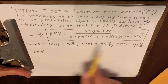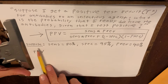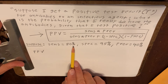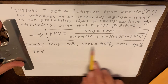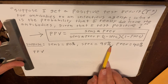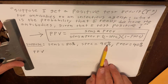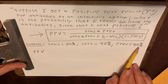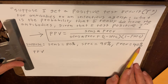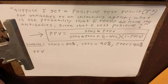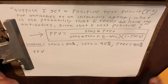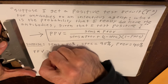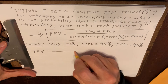So in this case, suppose the sensitivity of the screening test is 80%, the specificity is 95%, and the underlying prevalence of the condition is 40%. How would we calculate the positive predictive value given that we have this formula?